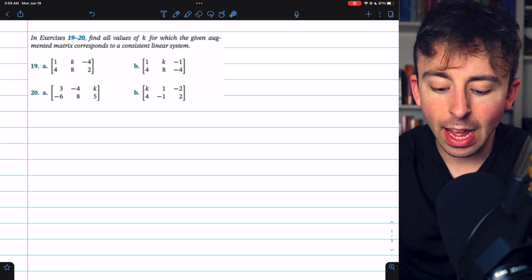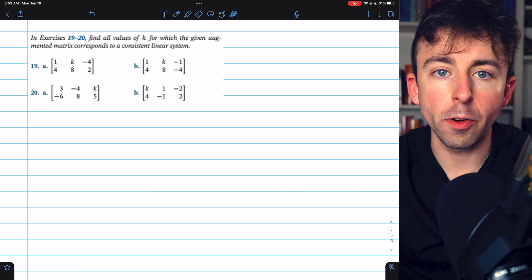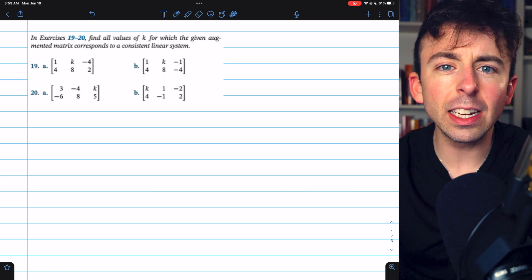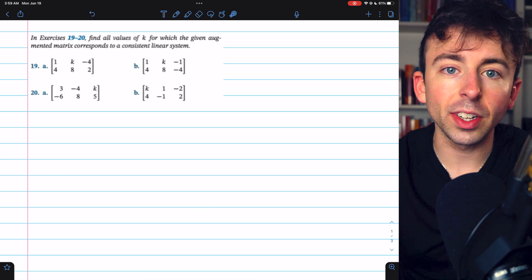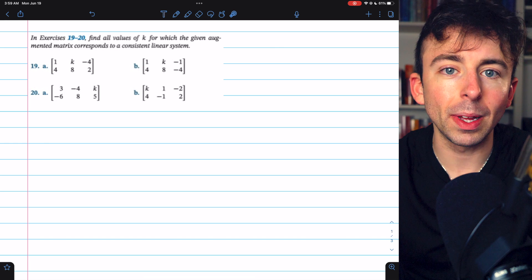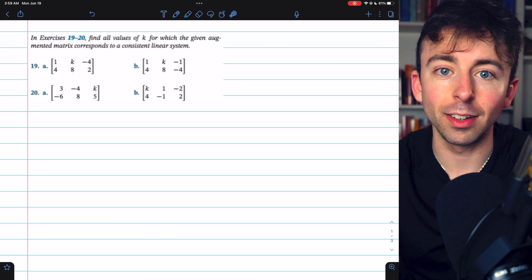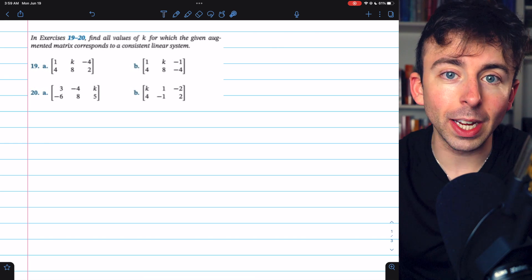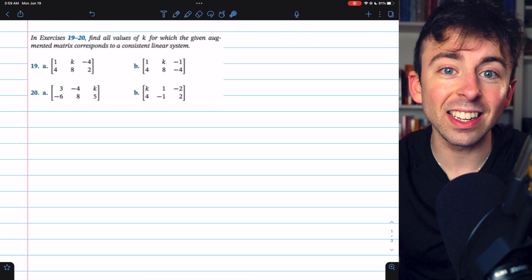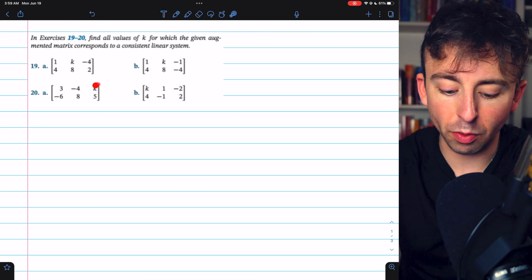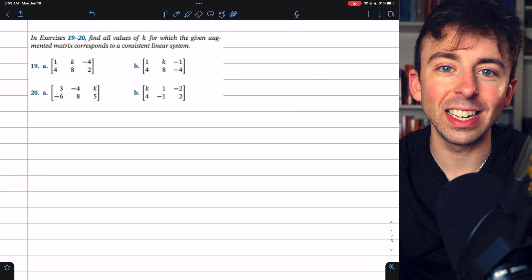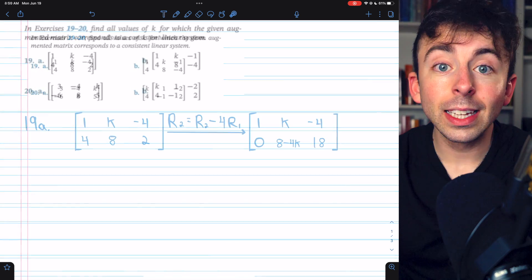and 20a, and I'll leave the last one for you to try on your own. This will just give us a slightly different angle of using an augmented matrix to solve a system. Instead of just having a system and putting it into an augmented matrix and solving it and seeing what happens, we're assuming the system is consistent, that it does have a solution, and we want to see what values of k that forces in these augmented matrices. Let's get into it.